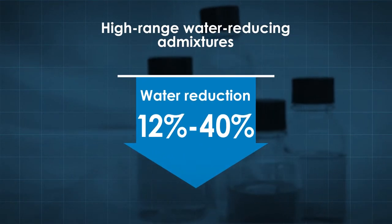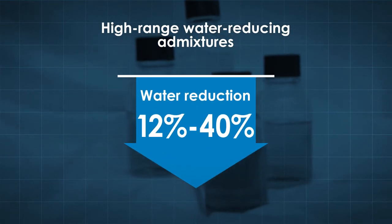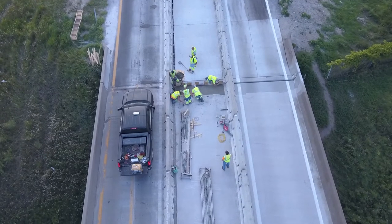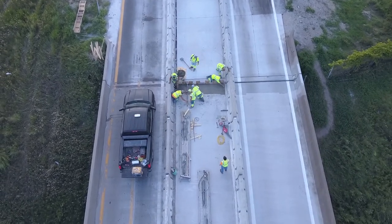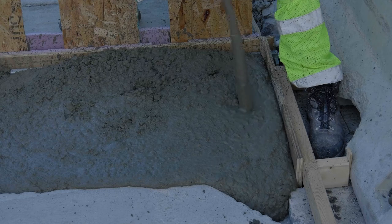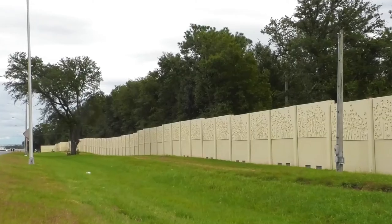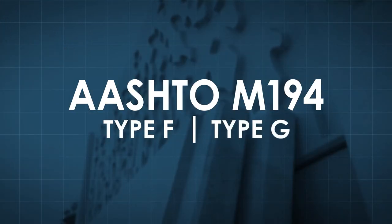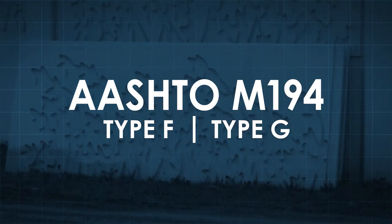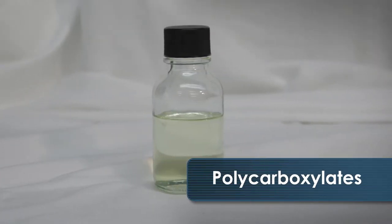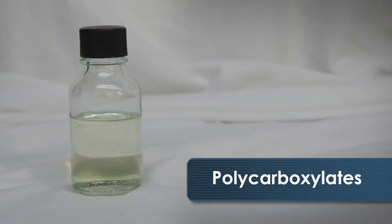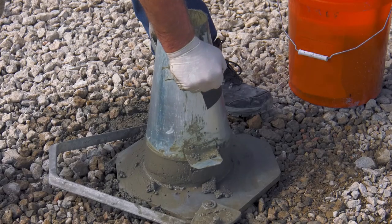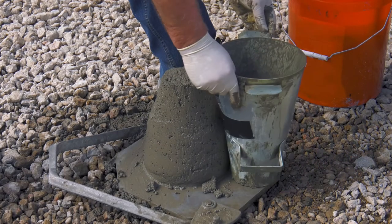High range water reducing admixtures provide water reduction between 12 and 40 percent without retardation. They are often used to produce high strength concrete with very good workability and extremely low water to cementitious materials ratio, meeting requirements of AASHTO M194 Type F or G, and are not often used in paving grade concrete. Polycarboxylates represent the newest water reducing admixture technology; they are more efficient at dispersing the cement grains and have improved long-term slump stability.